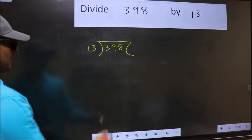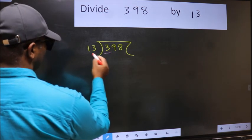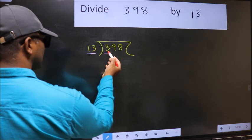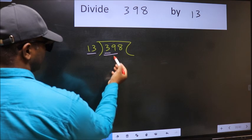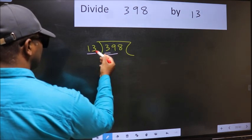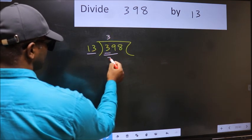Next, here we have 3 and here 13. 3 is smaller than 13, so we should take two numbers: 39. When do we get 39 in 13 table? 13 times 3 is 39.